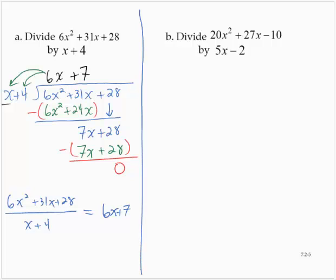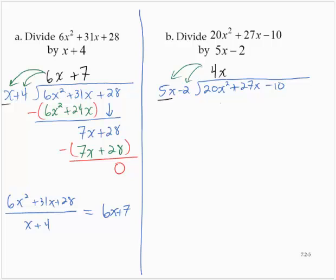Let's look at another one: 20x squared plus 27x minus 10 divided by 5x minus 2. Let's set it up — 5x minus 2 divides into 20x squared plus 27x minus 10. Focusing on the lead term: 20x squared divided by 5x leaves 4x. Multiplying back through the entire divisor gives us 20x squared minus 8x.